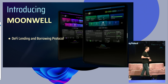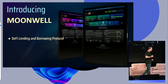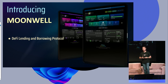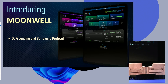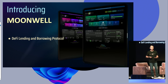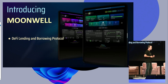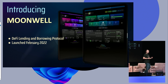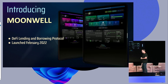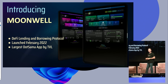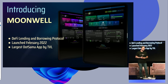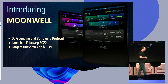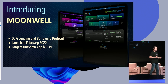Moonwell is a DeFi lending and borrowing protocol. It's permissionless and decentralized, meaning it trustlessly connects lenders that want to lend a digital asset to borrowers that want to borrow. This allows us to do new things with our crypto — for example, I can borrow against my crypto to pay bills in the real world. We launched our first protocol in February 2022 on Moonriver, and it quickly became the largest protocol in the Dotsama ecosystem by TVL. More recently, we launched on Moonbeam, which is a parachain on Polkadot, and we're really excited to help grow that ecosystem.